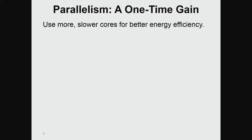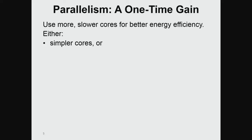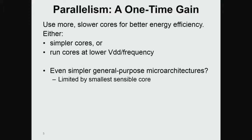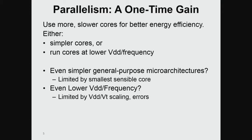The way to increase the efficiency of parallel processors within one technology node would be to use more and slower cores for better energy efficiency. To do that, we need either simpler cores or we need to run cores at lower supply voltages and lower frequencies. But both approaches have limits. Having simpler and simpler cores eventually reduces to something non-functional, limited by the smallest sensible core. And there is a limit to how low we can scale supply voltage, limited by VDD or VT scaling, reasonable performance, and errors that occur at very low voltages.